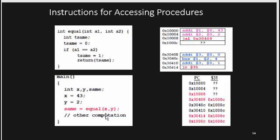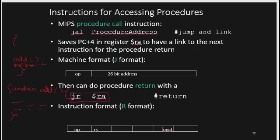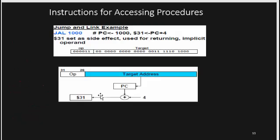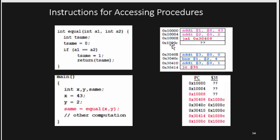After the procedure execution is complete, to return to the normal parts of the code, we use JR $31 or JR $RA. This returns control from the called procedure back to the instruction following the JAL call in the main code.